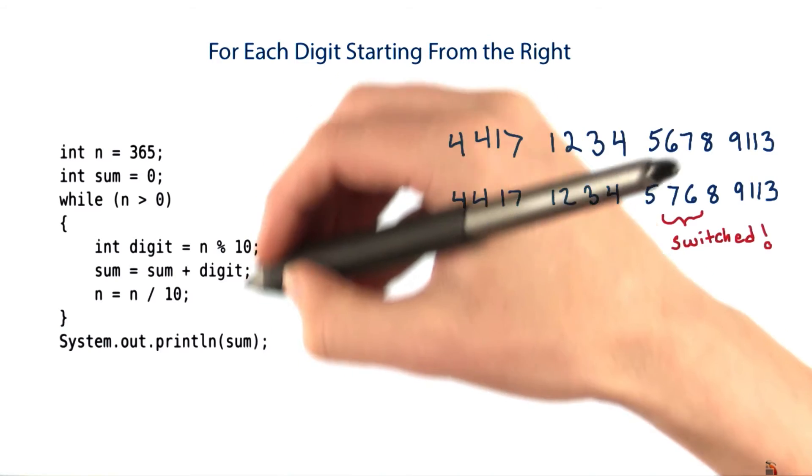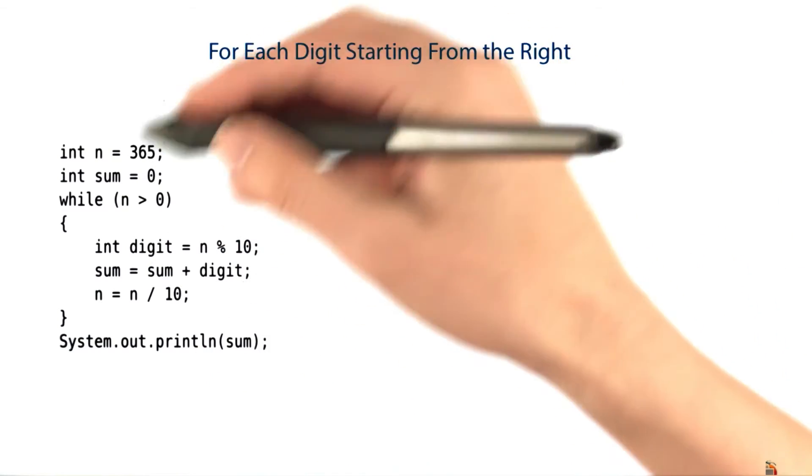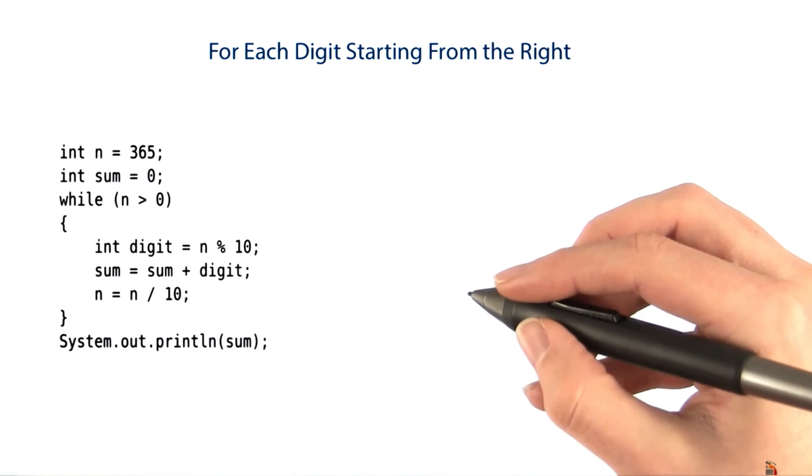That algorithm has a very similar structure to the code for summing digits. Let me write the pseudocode for this algorithm so we can compare this algorithm with the one for validating credit cards.